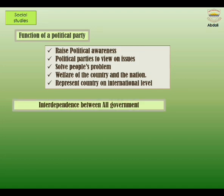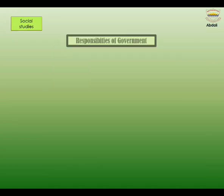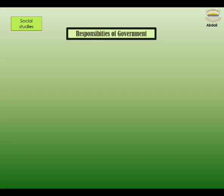Interdependence between federal, provincial, and local governments in Pakistan. All three governments have different areas of responsibility. The federal government makes laws and manages programs for the whole country. The provincial governments have powers to make decisions relating to their areas. The municipal governments are responsible for establishing bylaws and public services administered in a specific city, town, or village. To understand their interdependence, we need to understand their responsibilities.